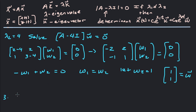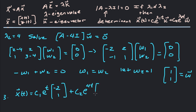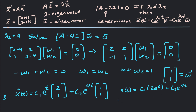The third step is to set up the general solution x of t, which is c1 e to the t times the first eigenvector [-2; 1], plus c2 e to the 4t times the second eigenvector [1; 1]. In component form, x of t equals c1 times negative 2 e to the t plus c2 e to the 4t, and y of t equals c1 e to the t plus c2 e to the 4t. Either form is sufficient as your solution.